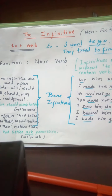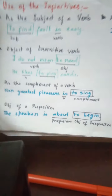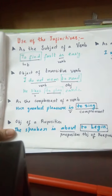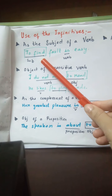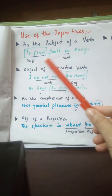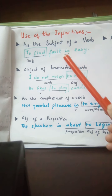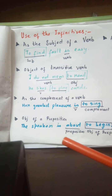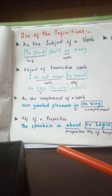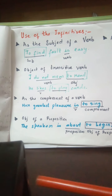Now let us look at the usages of the 'to + verb' infinitive form. The first usage is as a subject of a verb. For example, 'to find fault is easy.' Here, 'to find fault' is the subject of the sentence — the entire phrase is a noun phrase. 'To find' is not acting as a verb; the verb in the sentence is 'is.' Since a subject of a verb can never be a verb itself, 'to find' acts as a noun — the 'to + verb' form of the infinitive.